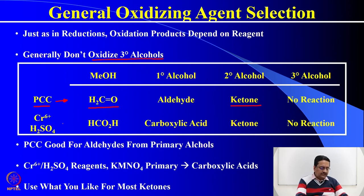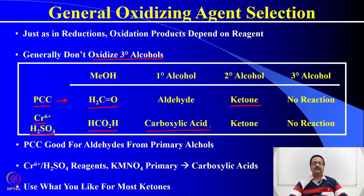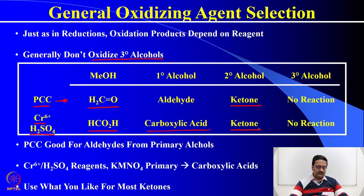You see that oxidation using PCC is restricted to aldehyde and ketone, and it does not oxidize the alcohol to the highest oxidation state, that is carboxylic acid. If you want to oxidize a compound to its carboxylic acid, then we should use chromic acid or Jones reagent, which oxidizes methanol to formic acid, primary alcohol to a corresponding carboxylic acid. Of course, secondary alcohol can only be oxidized up to ketone and not to a carboxylic acid. So depending on what kind of product you are trying to form, we should choose the appropriate oxidizing agent and reaction conditions.